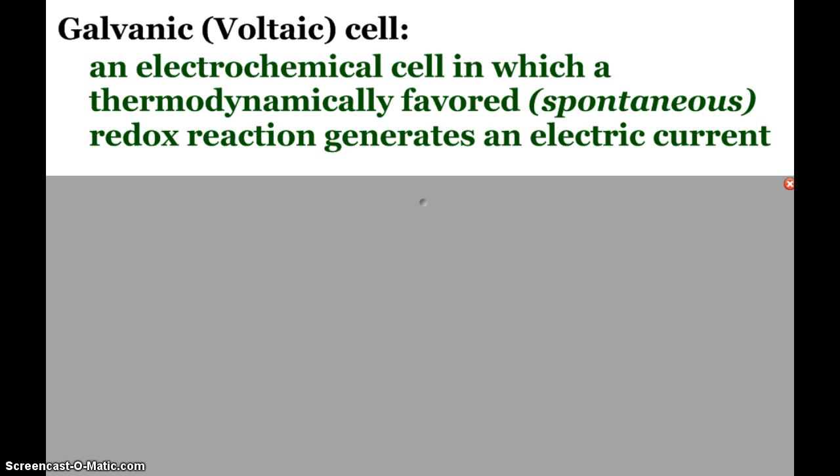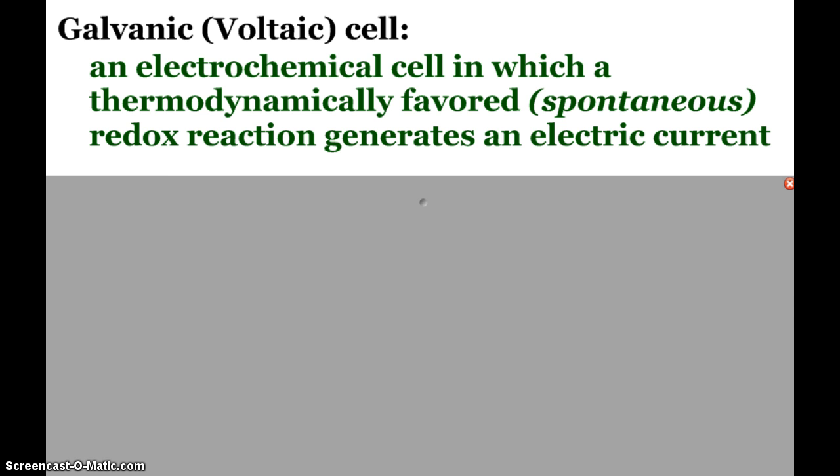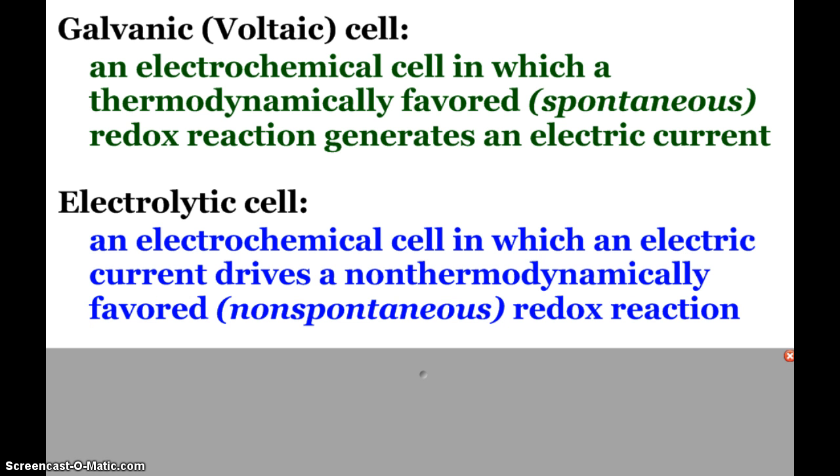First, we have our galvanic or voltaic cell, and this is where we have a thermodynamically favored, spontaneous redox reaction that is going to generate an electric current. The opposite of that is an electrolytic cell, and this is where our cell will use an electric current to drive a non-thermodynamically favored, a non-spontaneous redox reaction. Now, we're going to focus now on the voltaic cells, and we'll come back to electrolysis later.